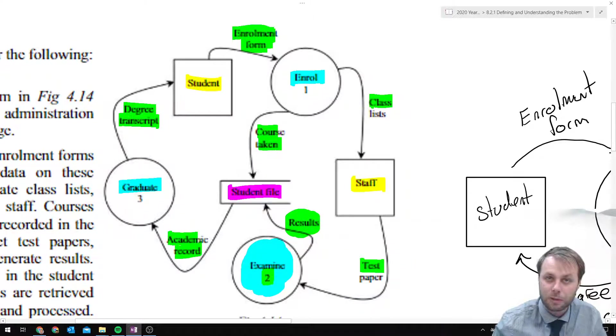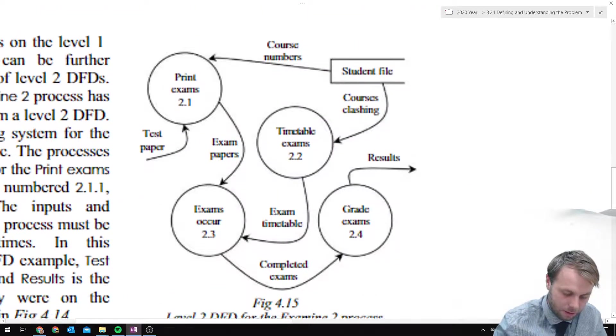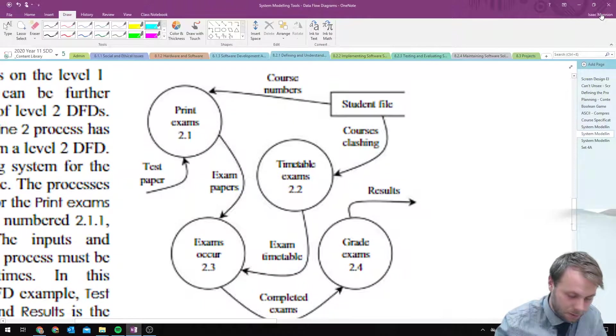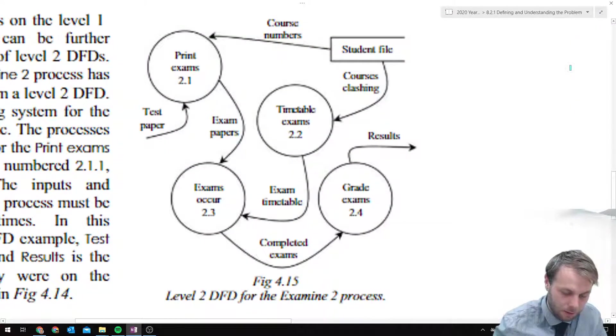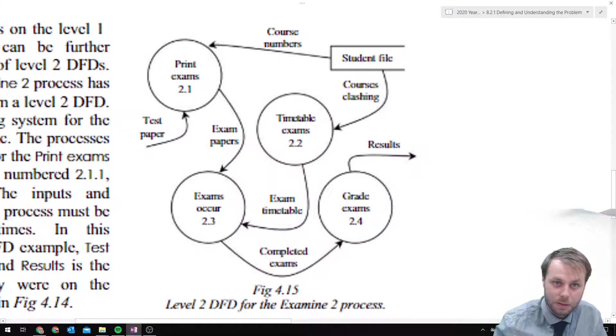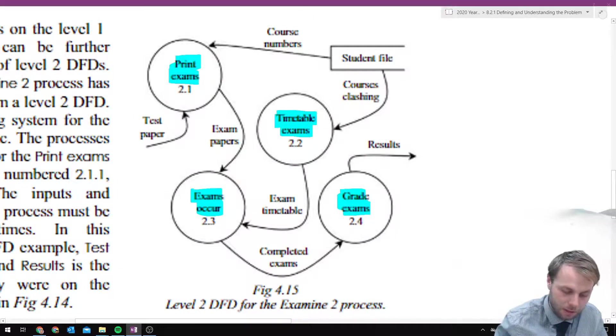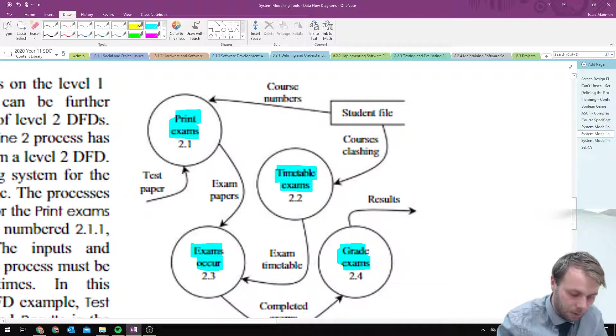So this is a solution that's been produced for it, and we can see how it's broken down into four sub-processes. The four sub-processes are print exam, exam timetable, exams occur, and grade exams. In addition to that, we can also see the numbering system that's being used: 2.1, 2.2, 2.3, 2.4.